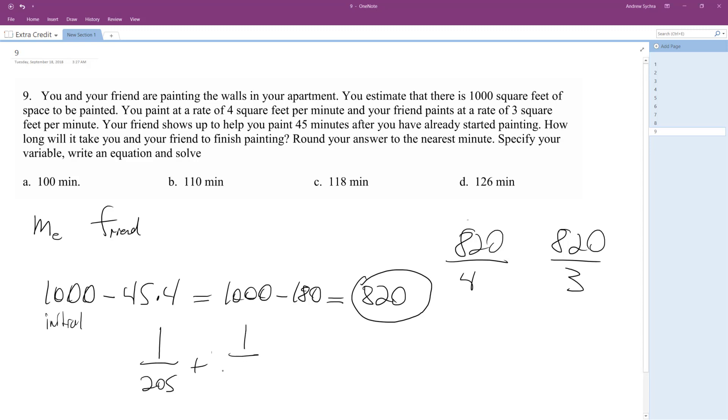So 1 over 820 over 3, well it's same thing as 3 over 820, but I'll just make it that. And then it's equal to 1 over x. So we calculate this, we get a common denominator.